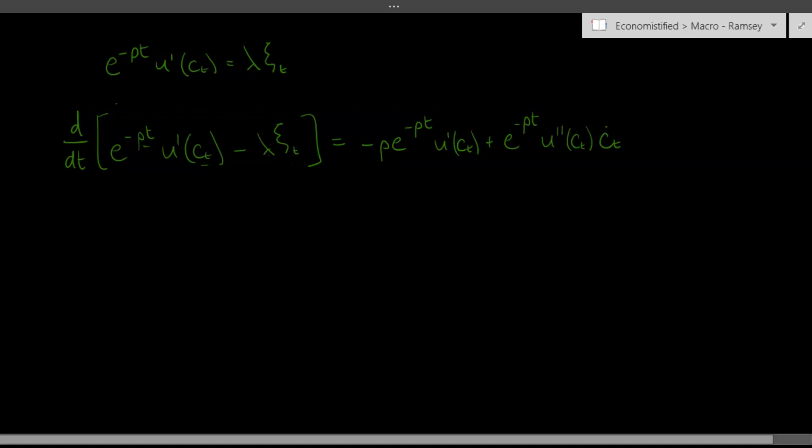And then in the second term, lambda is just a constant, and ct, remember, was just defined as e to the negative of this integral of all the future interest rates. So if we differentiate this ct with respect to time, we're going to need to use the Leibniz rule again.